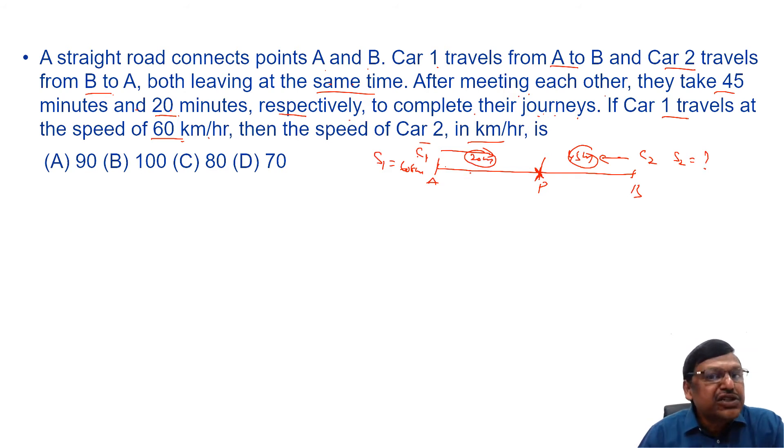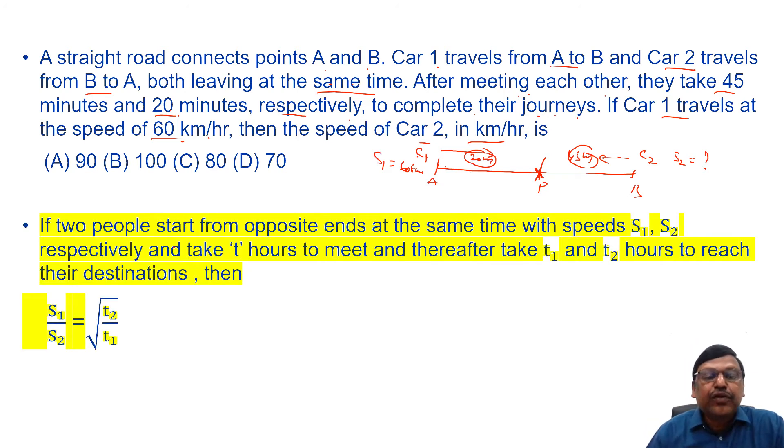Students, there is a shortcut formula. It says like this. If two people start from opposite ends at the same time, like here two cars are starting from opposite end at the same time with speeds of S1 and S2 and take T hours to meet.